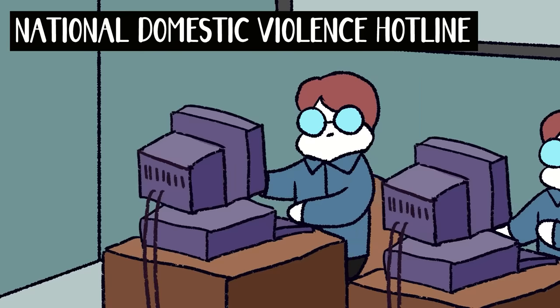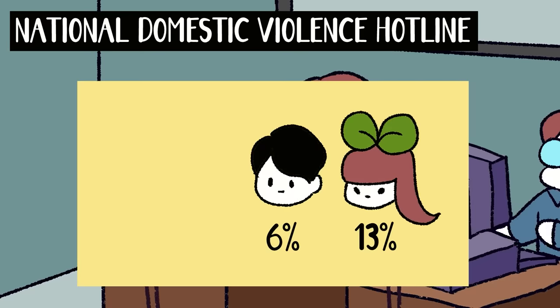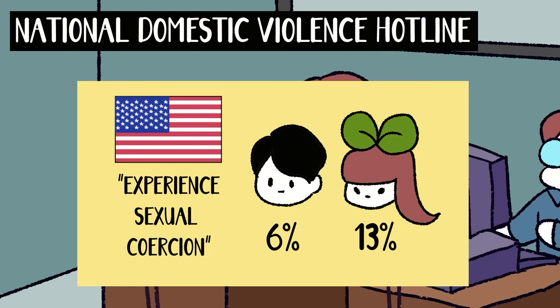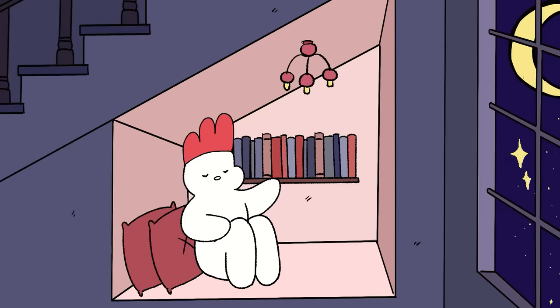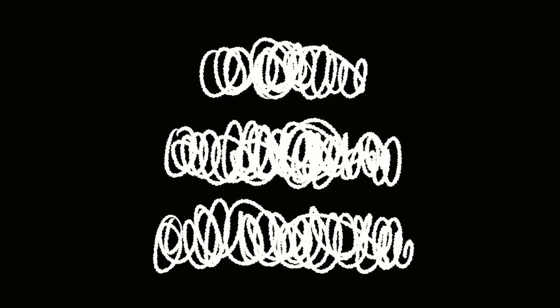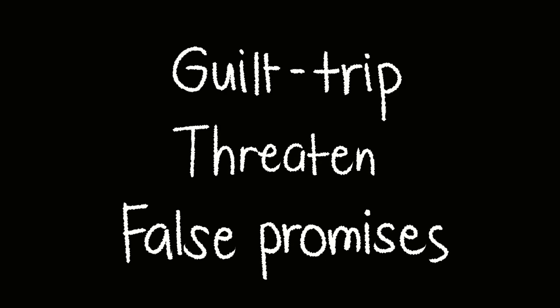Excessive persuasion and deceit: according to the National Domestic Violence Hotline, estimates suggest that 13% of women and 6% of men in the United States will experience sexual coercion in their lifetime. Excessive persuasion and deceit may just sound like annoying methods used by scammers, but abusers are also known to guilt trip, threaten, and make false promises just to get what they want.